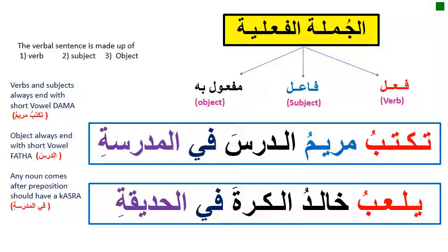The verb and subject always end with a short vowel فتحة. Any noun that comes after a preposition should have a kasra — في المدرسة. Another example: يلعب خالد الكرة في الحديقة. يلعب is the فعل (verb), خالد is the فاعل (subject), الكرة is the مفعول به (object), في is a حرف جر (preposition), and الحديقة is اسم مجرور.